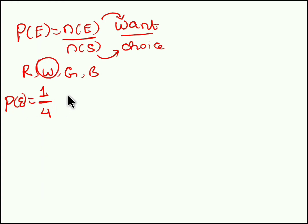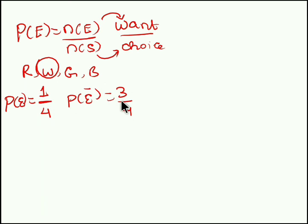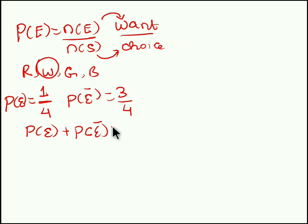What is the probability of choosing a non-white color ball from the bag? If 1 out of 4 is white, then remaining 3 out of 4 is a non-white color ball. So probability of an event happening plus probability of an event not happening will always be equal to 1. That is 1 by 4 plus 3 by 4 gives you 1. We call this 1 as total probability.